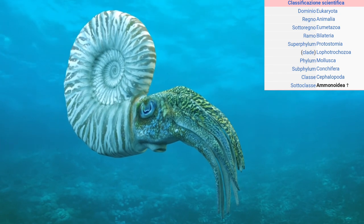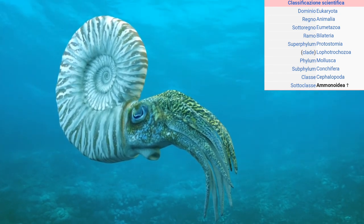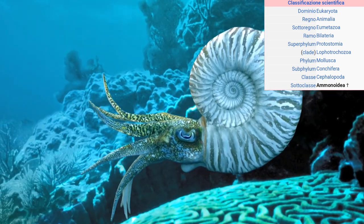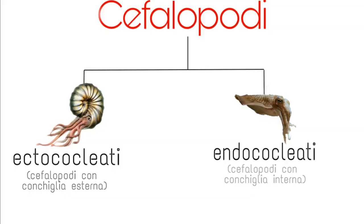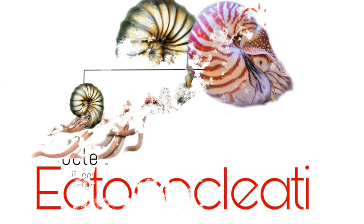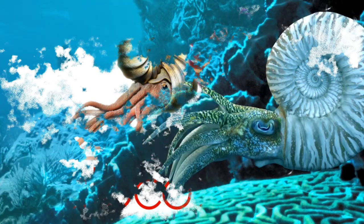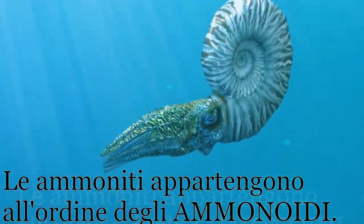Innanzitutto, cosa sono le ammoniti? Le ammoniti sono innanzitutto animali che appartengono al filo dei molluschi e in particolare alla classe dei cefalopodi. I cefalopodi si dividono in base alla conchiglia, che può essere esterna o interna: in ectococleati, che hanno conchiglia esterna, o endococleati, a cui fanno parte polpi, calamari, seppie e così via. Le ammoniti, come anche i nautiloidi, appartengono agli ectococleati, e in particolare tutte le ammoniti appartengono all'ordine degli ammonitida.